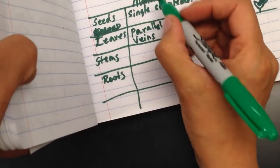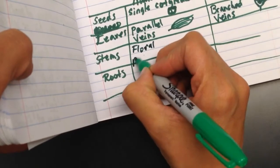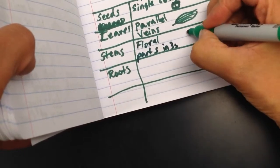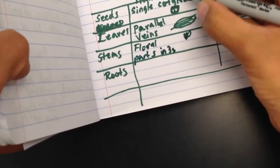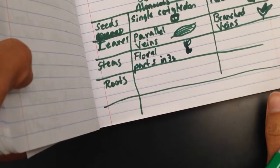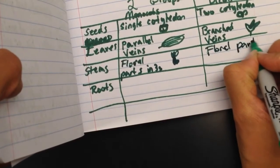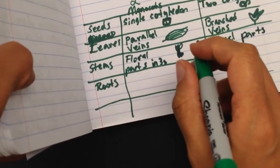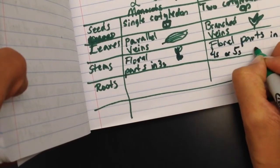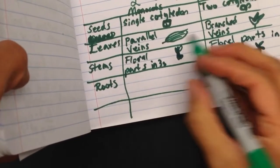The flower parts in a monocot, so the flower parts, are in groups of threes. So you'll have one, two, three. One, two, three. I don't know, that's an ugly flower, but there it is. And then the floral parts in a dicot are in fours or fives. So one, two, three, four, five. And then finally,